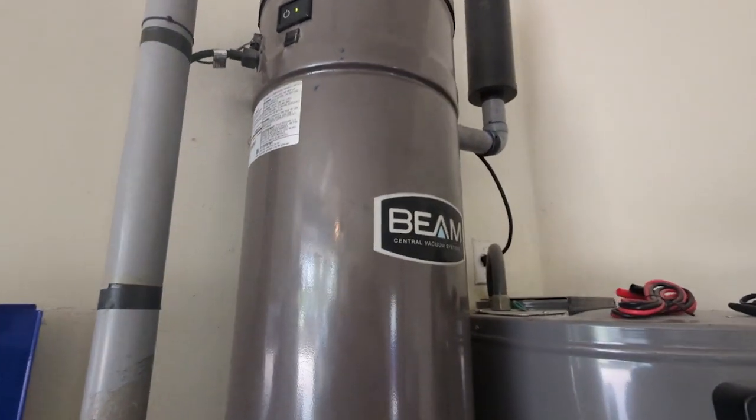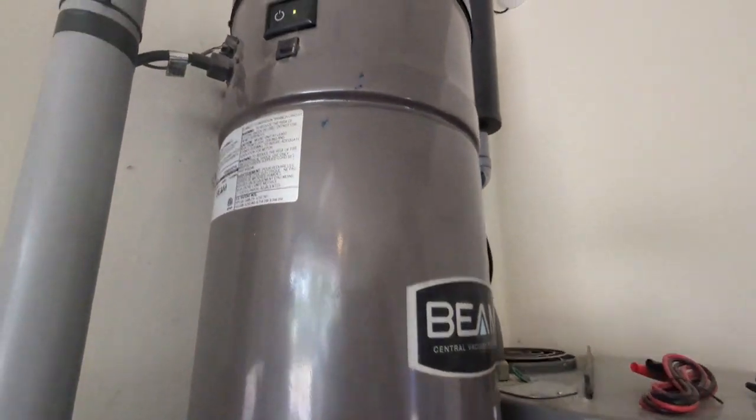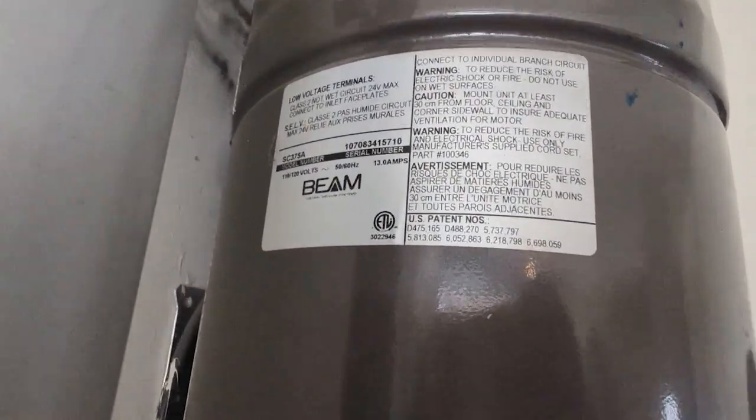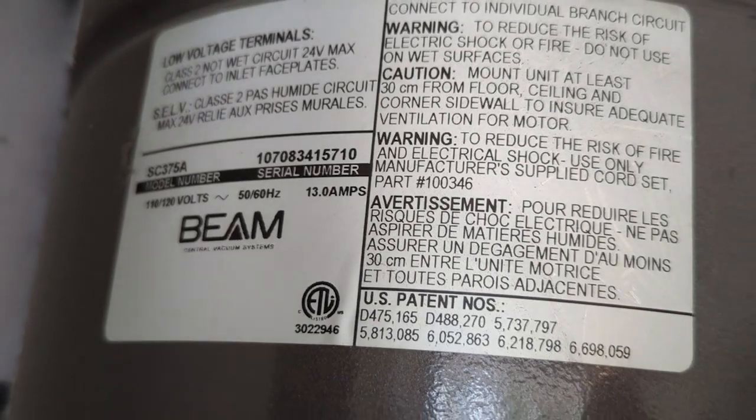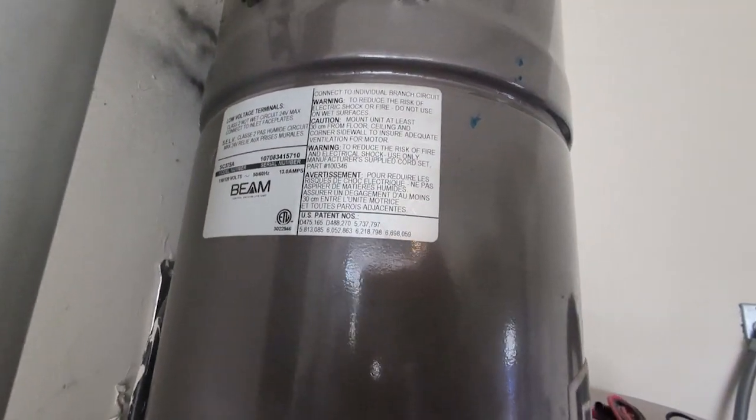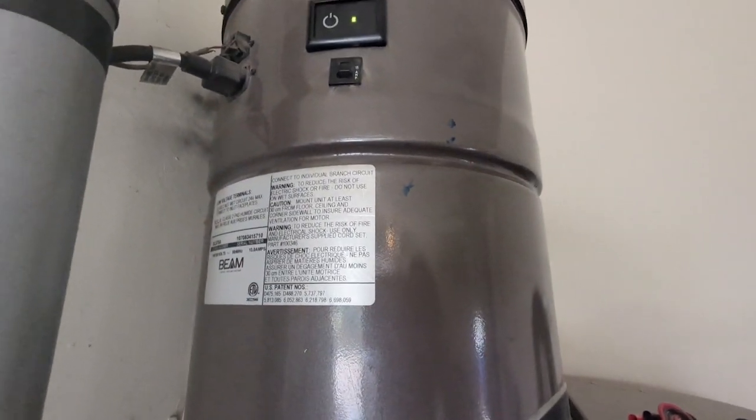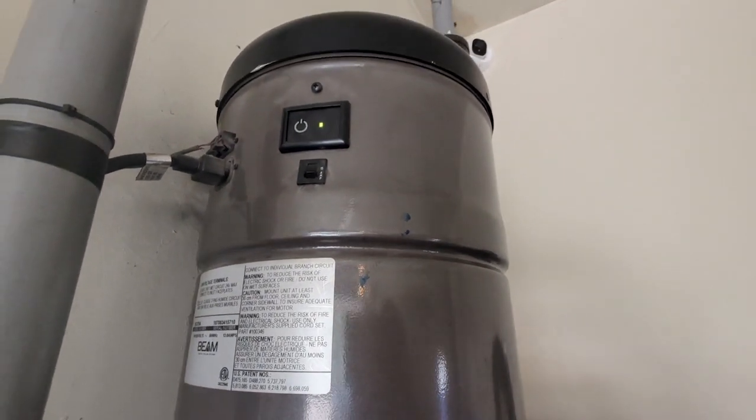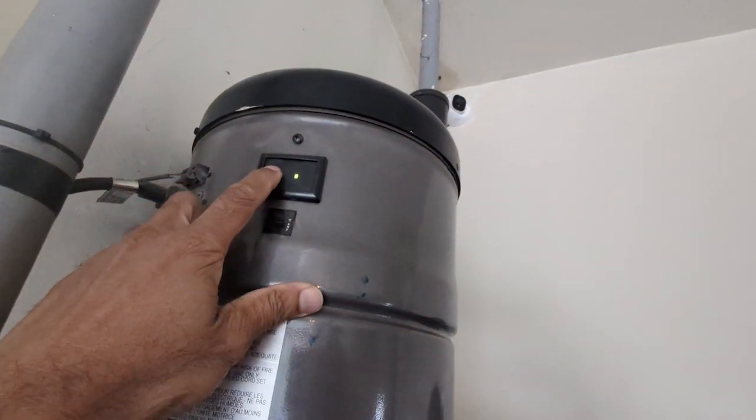All right, so I have a Beam central vacuum system model number SC375A. I'm not sure, but I think it's either the brushes or the motor itself that's burned out. If I switch it on, it runs for a second and then powers off, the light goes off, and I have to reset the breaker.